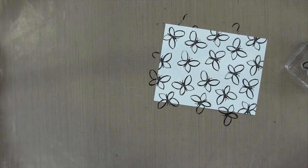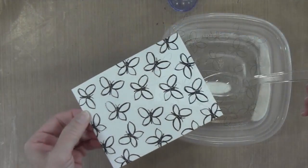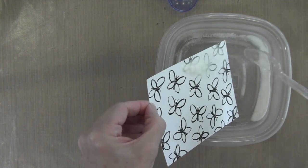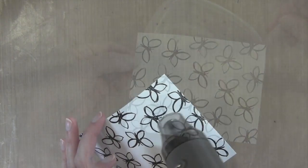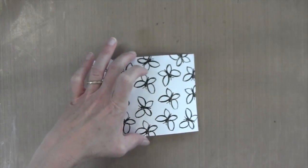This is Versafine Black Onyx ink, a pigment ink, so I'll be able to clear emboss on top of it because it stays wet for a long time. I'll sprinkle some clear embossing powder, this is Hero Arts Ultra Fine, and then I'll heat it to set it.